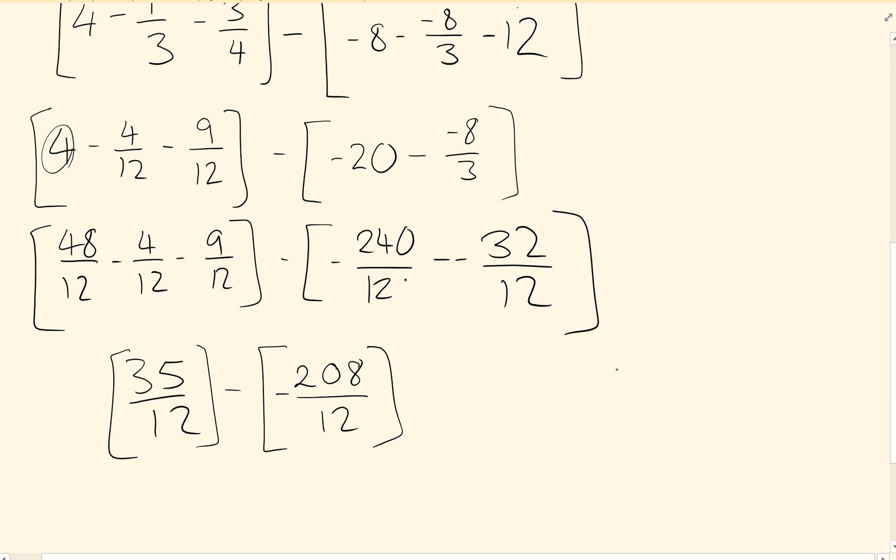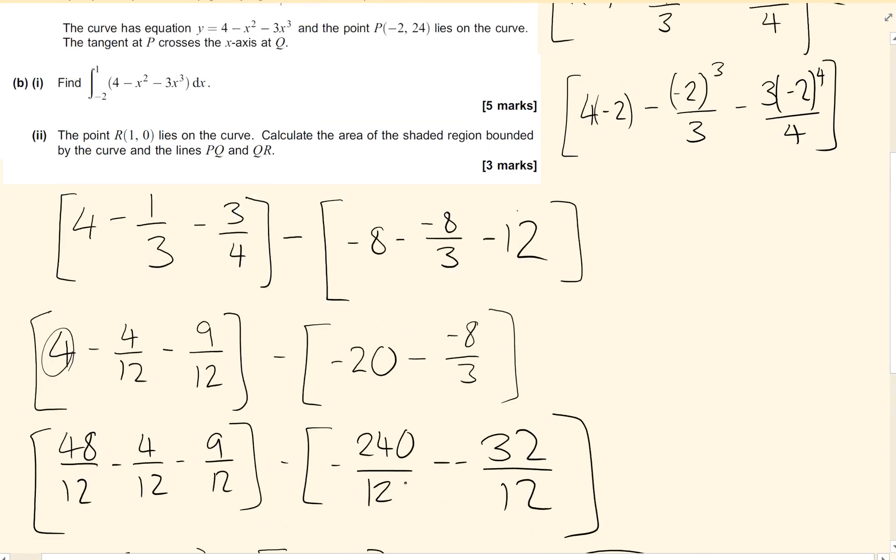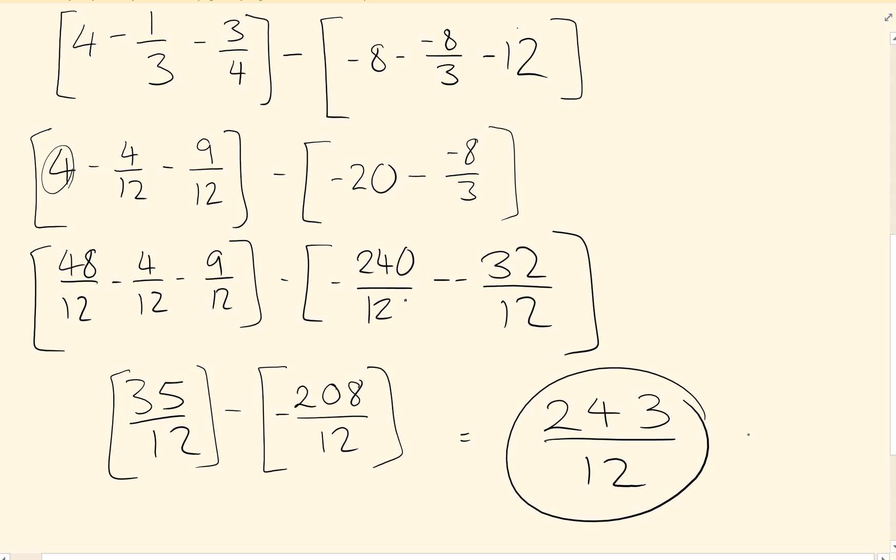Which is the correct answer and worth five marks. This is a lot of arithmetic with fractions. It's very easy to go wrong, so it's just worth taking your time. Once you've got that, 243 twelfths, I'm just going to clear the book and we will come back together.